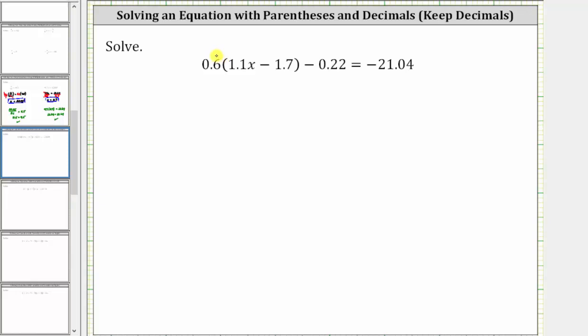We eliminate the parentheses by distributing 0.6. So distributing 0.6 times 1.1x is equal to 0.66x. And then we have minus 0.6 times 1.7. 0.6 times 1.7 is 1.02, giving us minus 1.02. And then we still have minus 0.22 equals negative 21.04.